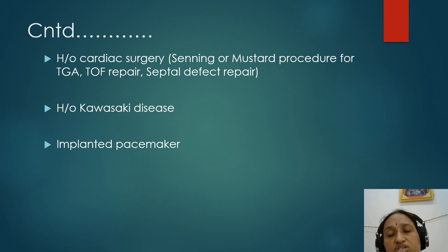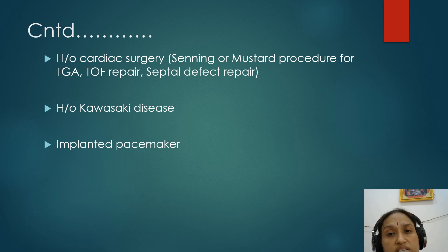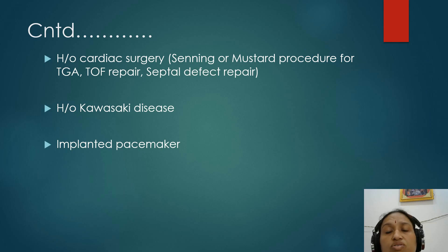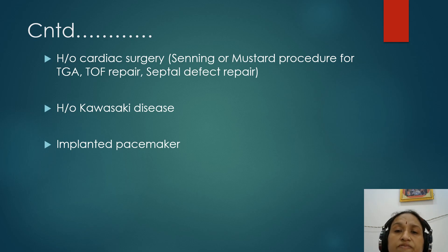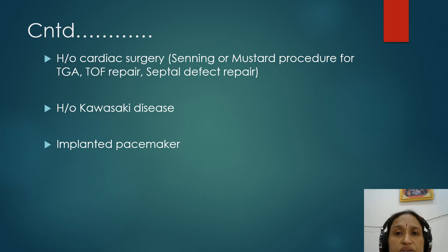Many times a patient has history of cardiac surgery. Complications of certain surgeries can present as syncope. If the patient was operated for transposition of great arteries — Senning or Mustard operation — there are chances of sinus node dysfunction. If operated for Tetralogy of Fallot, there are chances of ventricular tachycardia. If septal defect repair was done, there are chances of late development of AV block. Any history of cardiac surgery warrants thorough evaluation.